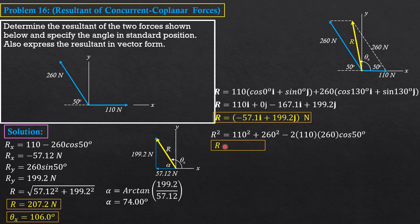The magnitude of R = 207.2 Newtons. For the angle theta_x, do not use the sine law carelessly, because your calculator will give an acute angle less than 90° if you apply it directly without thinking.